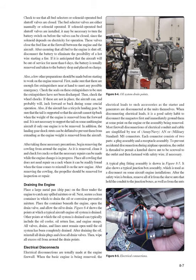A few other preparations should be made before starting engine removal. Make sure that there are enough fire extinguishers near at hand and check the seals to be sure they have not been discharged. Check the wheel chocks — if not in place, the aircraft can inch forward or back during a crucial operation. If the aircraft has a tricycle landing gear, be sure the tail is supported so the aircraft cannot tip back when the engine weight is removed from the forward end. The landing gear shock struts can be deflated to prevent them from extending as engine weight is removed. After taking these precautions, begin removing the cowling from around the engine, clean it, check for cracks, and place all cowling not needing repair on a rack. After removing the cowling, the propeller should be removed for inspection or repair.